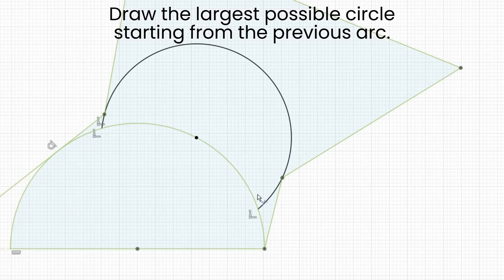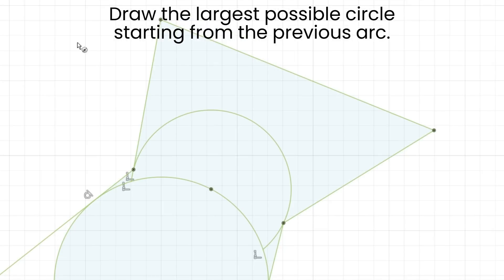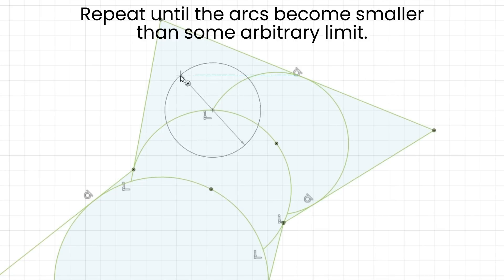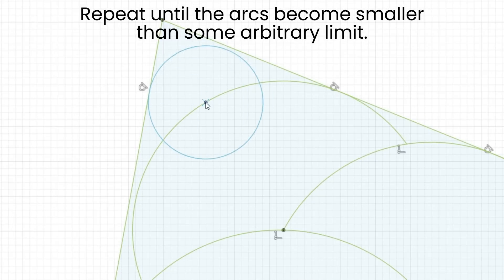And then we just repeat the first three steps on this next arc. So we create a point on the arc, we grow a circle from that point until it hits an edge, and then we start a new arc. As the pattern continues, we get one long branch of arcs that repeats until there's no more space left to create any more arcs.